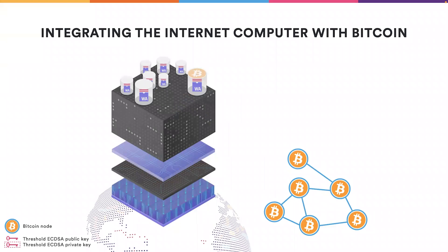We have the Internet Computer and we have the Bitcoin blockchain. We do a so-called direct integration, which means we do not have any intermediaries in between. This means we don't need to trust or rely on any additional parties. We don't need any additional trust assumptions and we introduce no additional risks. This is very good in terms of security.